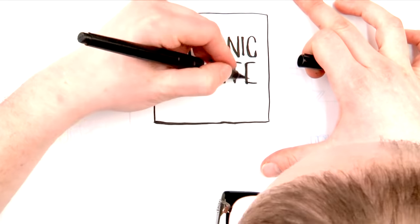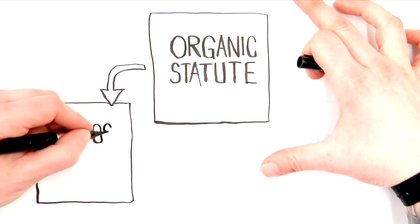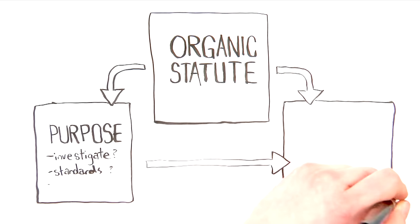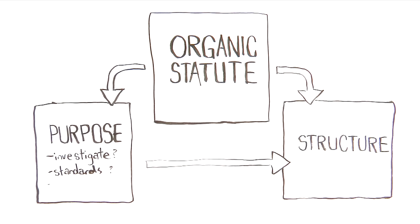Agencies are formed by an act of Congress. Congress writes a kind of law called an organic statute that lays out the purpose and the structure of the agency, and then the agency is in charge of implementing that purpose as it's laid out in the statute.